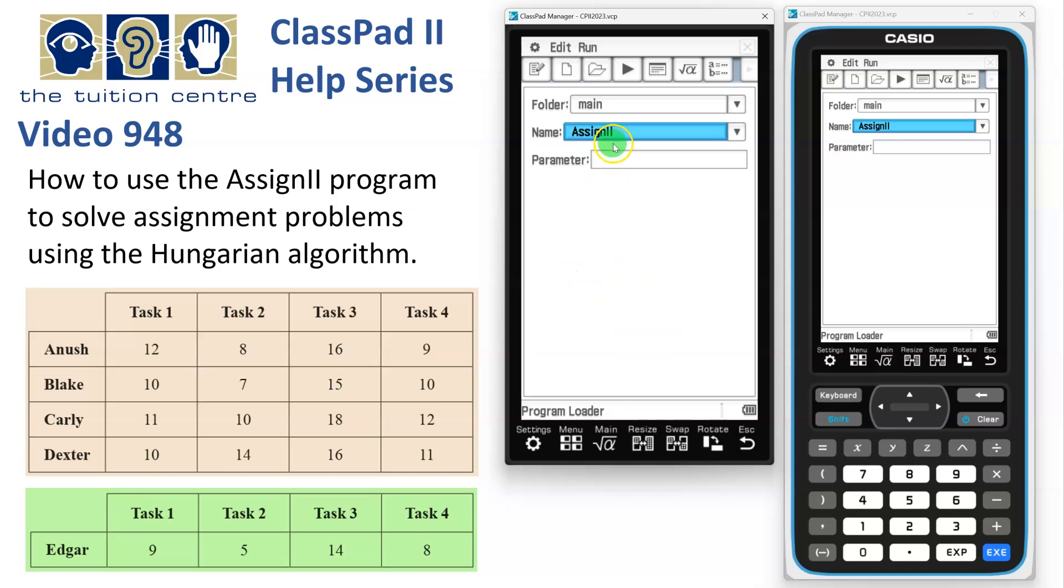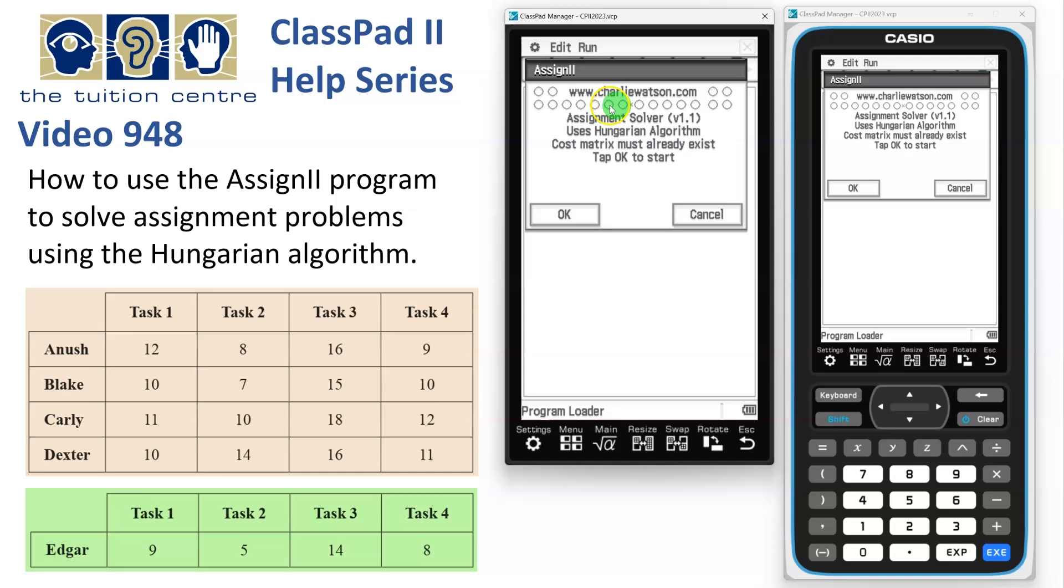If you don't have it in your calculator, if you visit CharlieWatson.com/ATAR, there's help there on how to get a copy of the program and how to put it into your calculator. So we've chosen the program, we hit the play button at the top and we get this splash screen. Cost matrix must already exist, so we tap OK.